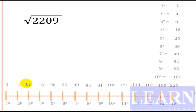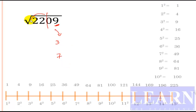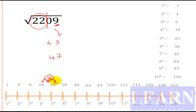Instead of always calculating the middle square, we can use a proximity method to save time. For the next problem, the last digit is 9, so it can be either 3 or 7. The first part is greater than 16 (which is 4 squared), giving us either 43 or 47. Now check: is the first part closer to 25 or to 16?